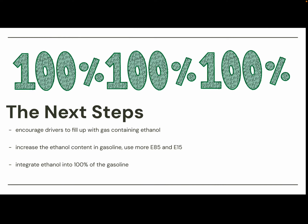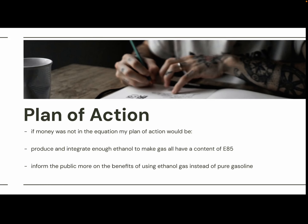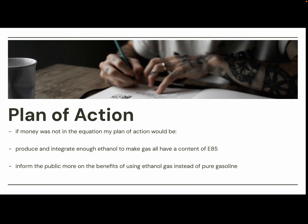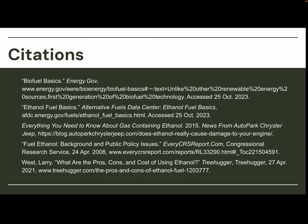Some next steps would be to encourage drivers to fill up with ethanol-containing gas rather than pure gasoline, increase the ethanol content in gasoline using more E85 and E15, and integrate ethanol into 100% of gasoline to reduce harmful emissions further. The plan of action, if cost were not a factor, would be to produce enough ethanol to achieve E85 content — 85% ethanol instead of only 10% — and to better inform the public on the benefits of using ethanol gas over pure gasoline.